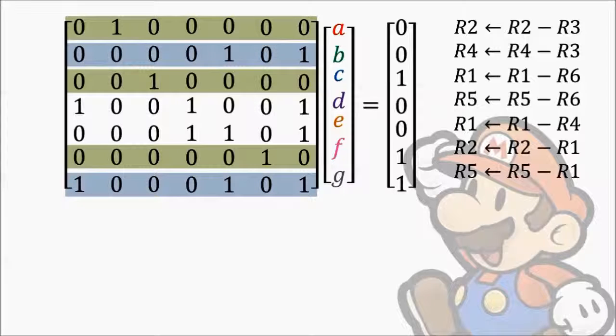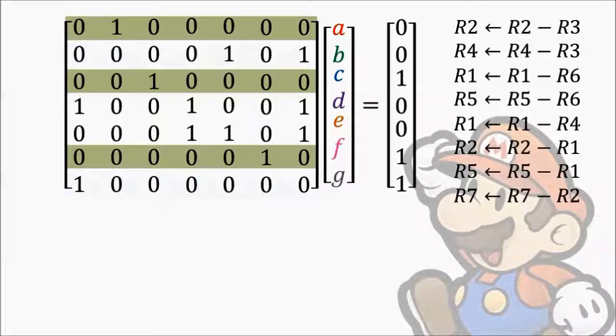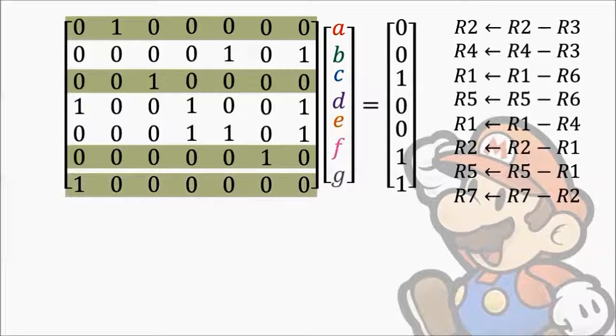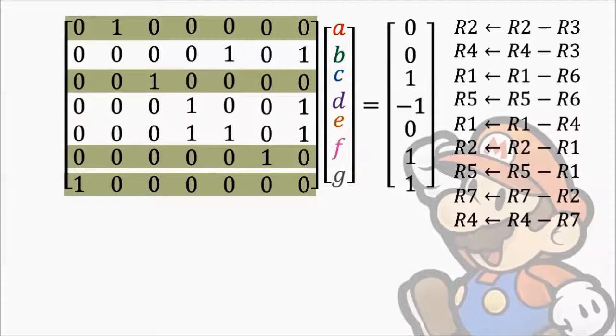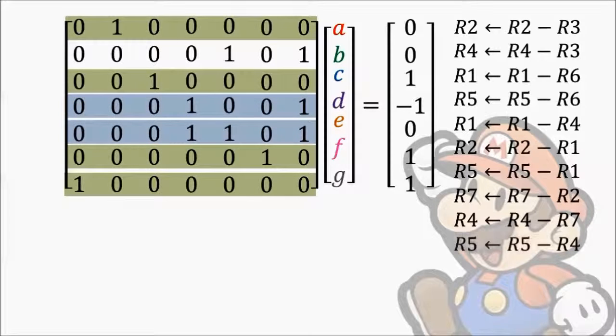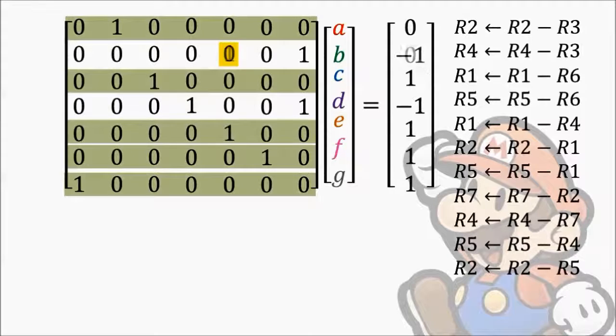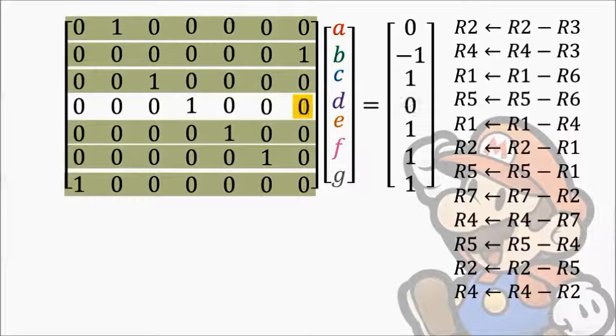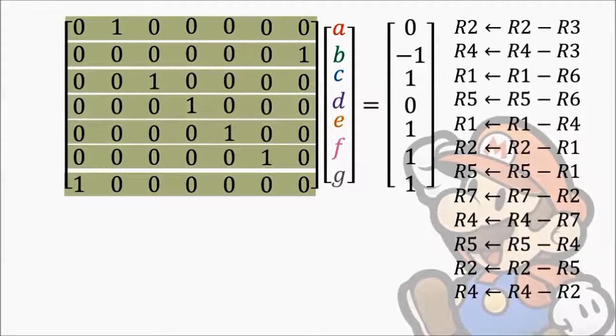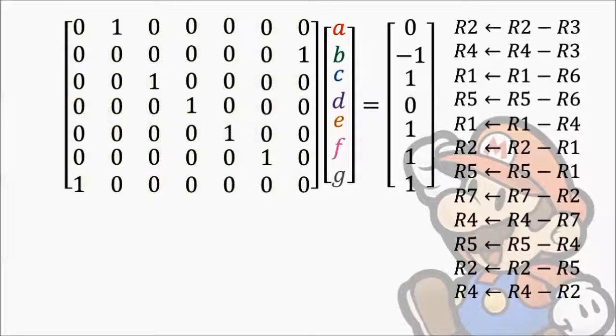And whenever we see two similar looking rows, we can try subtracting them as well. Eventually, each row will only have a single non-zero entry.